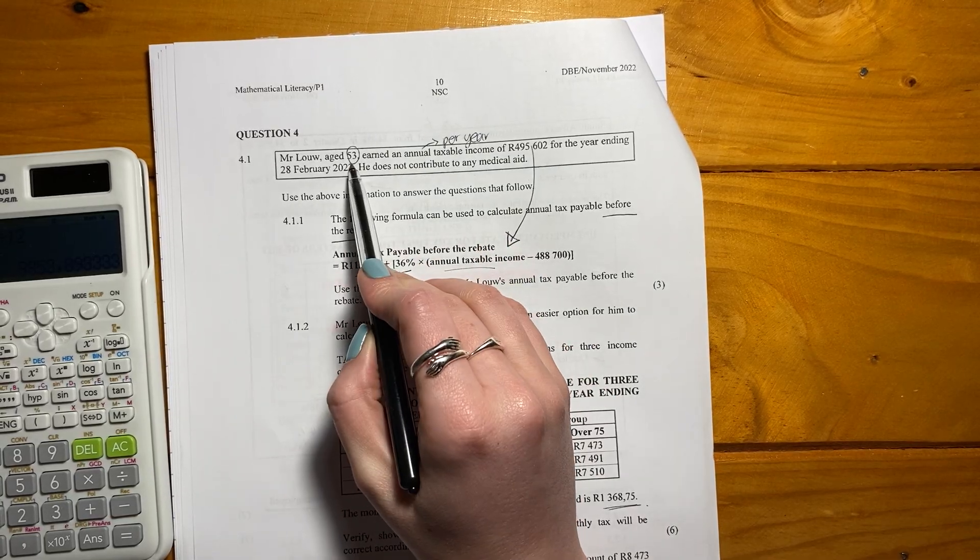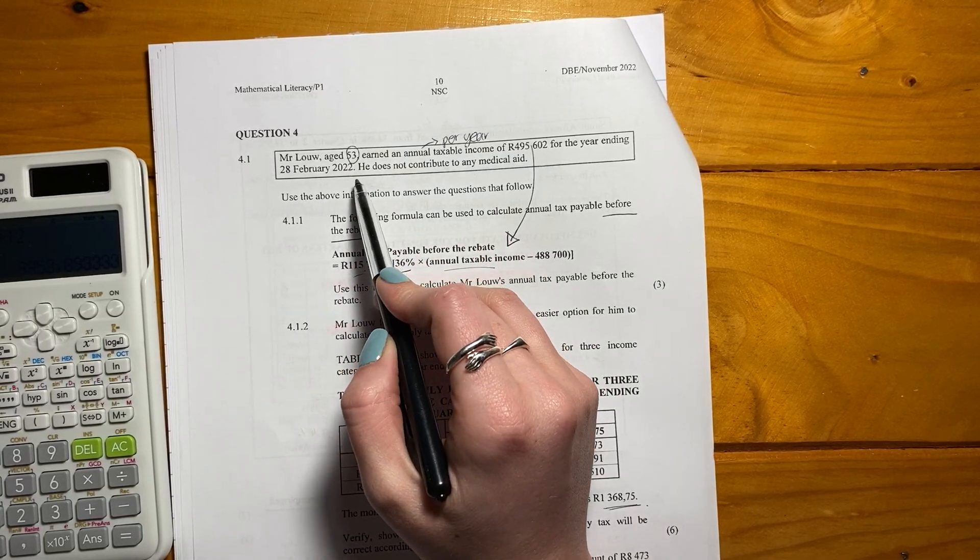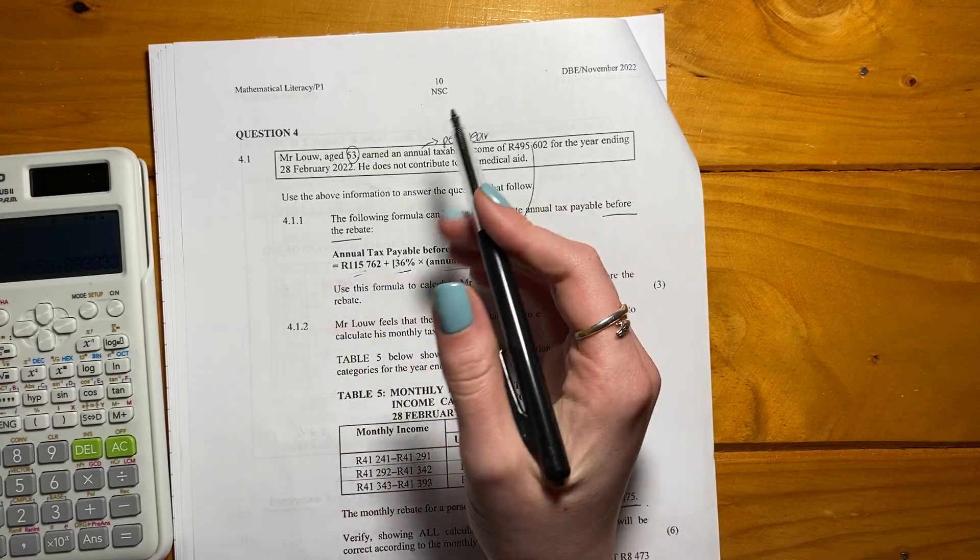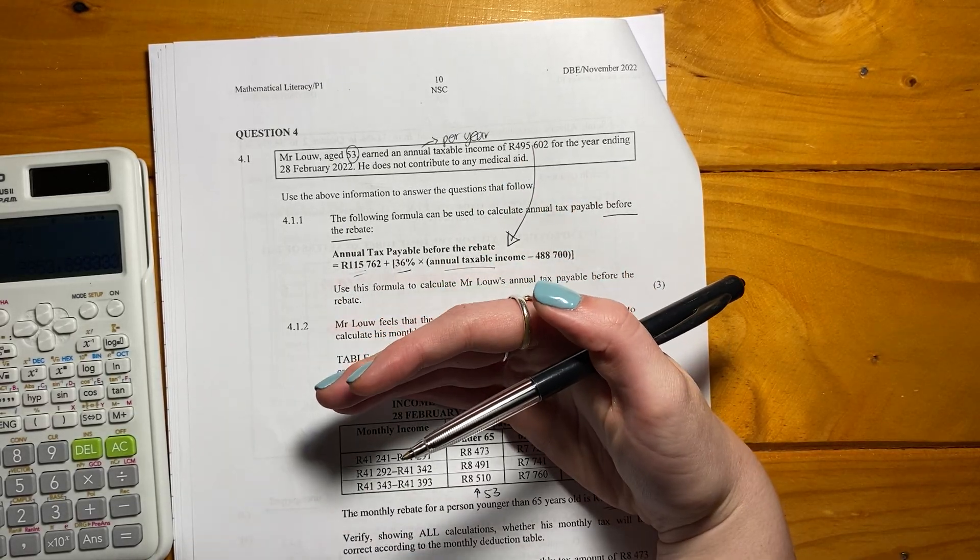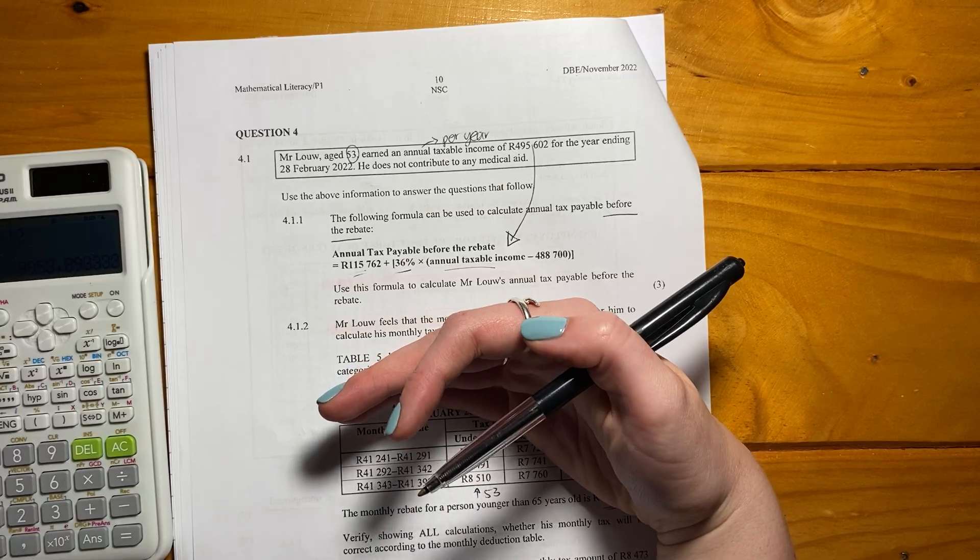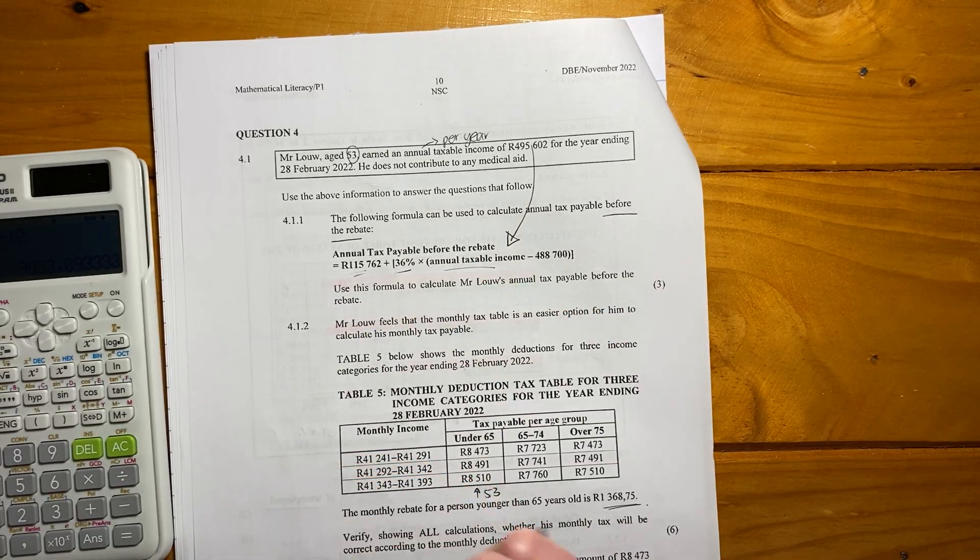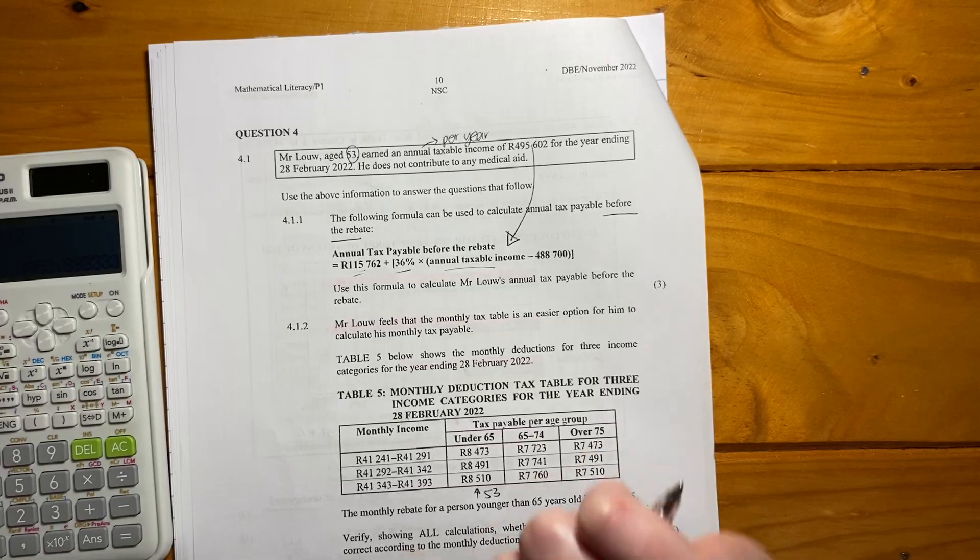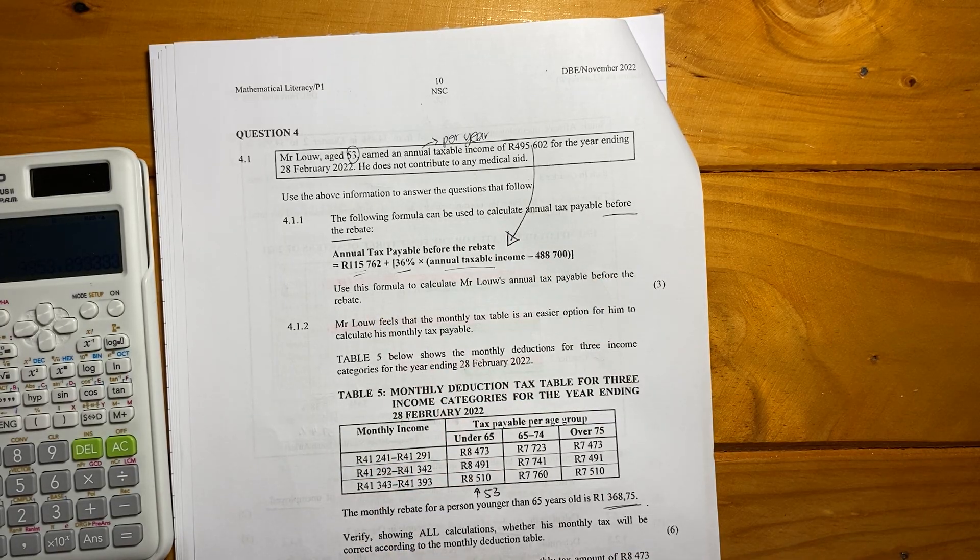It says Mr. Lowe, age 53. Now remember, it's important with tax to know how old the taxpayer is because you get different rebates based on your age. What's a rebate? A rebate is basically an amount that they give you back. It reduces the amount of tax that you pay.